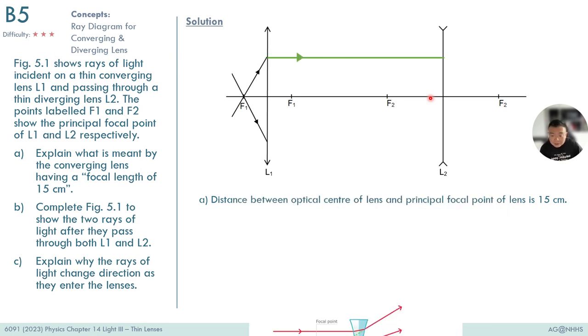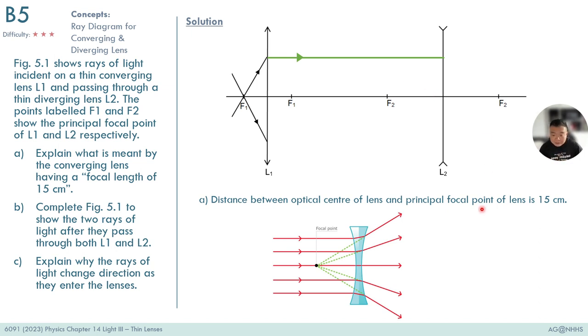Recall the way to draw diverging light rays. Diverging light rays always converge back, they meet back at the focal point over here. This is the F2 point, the focal point.